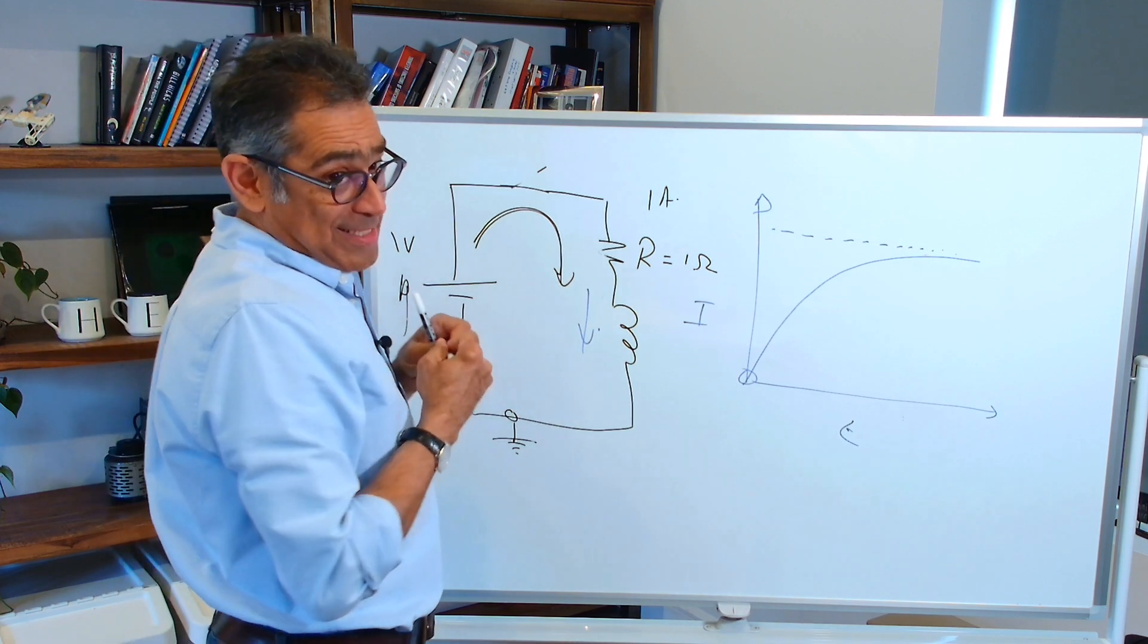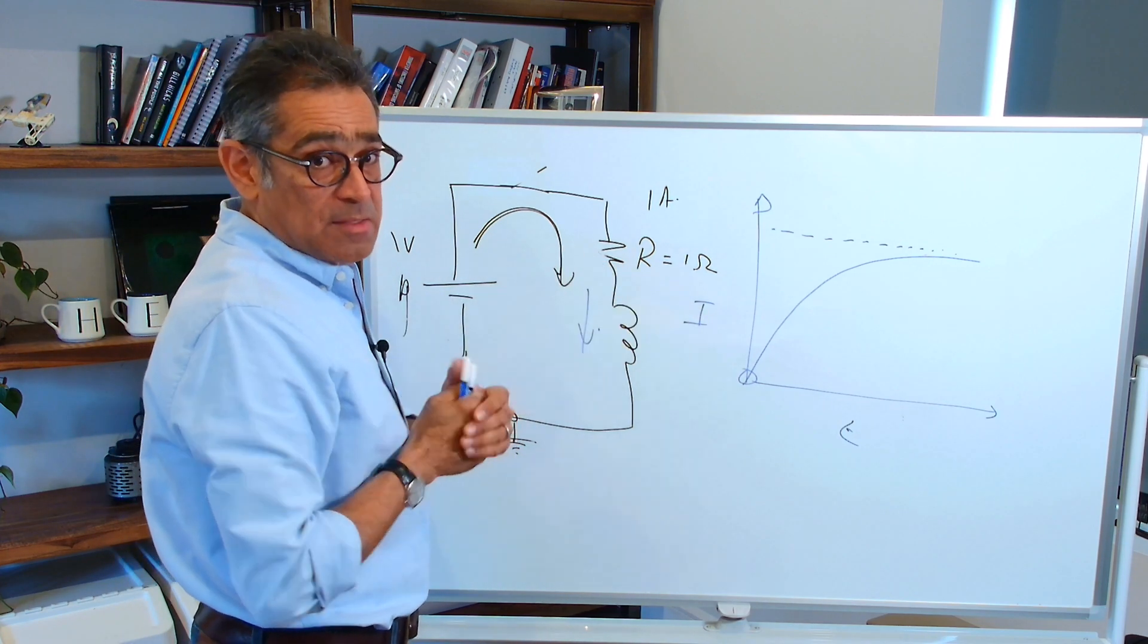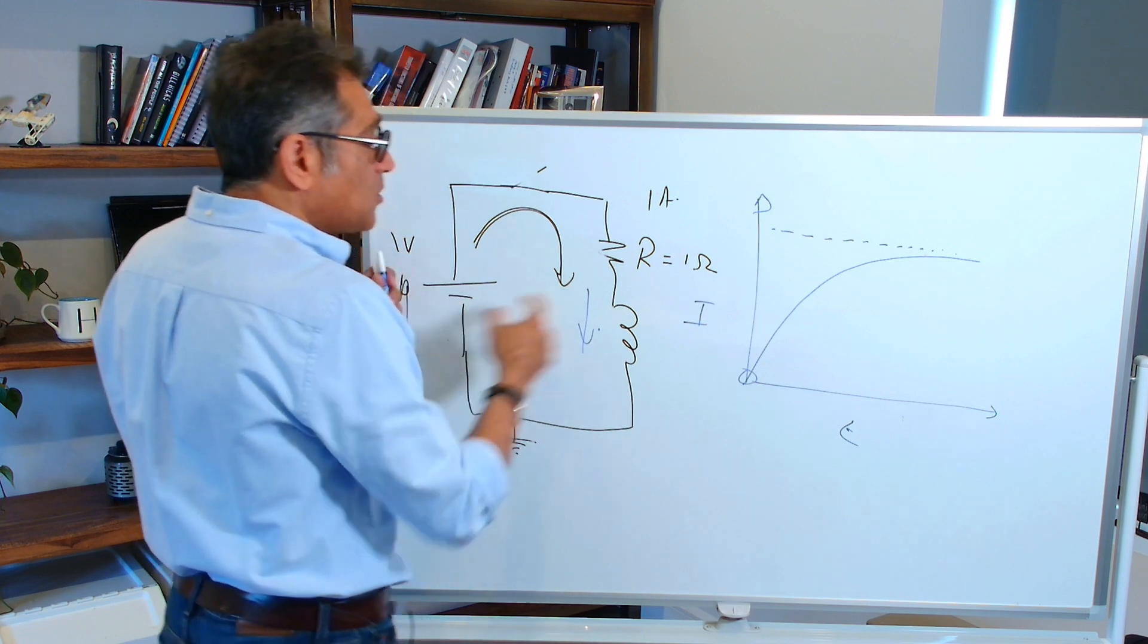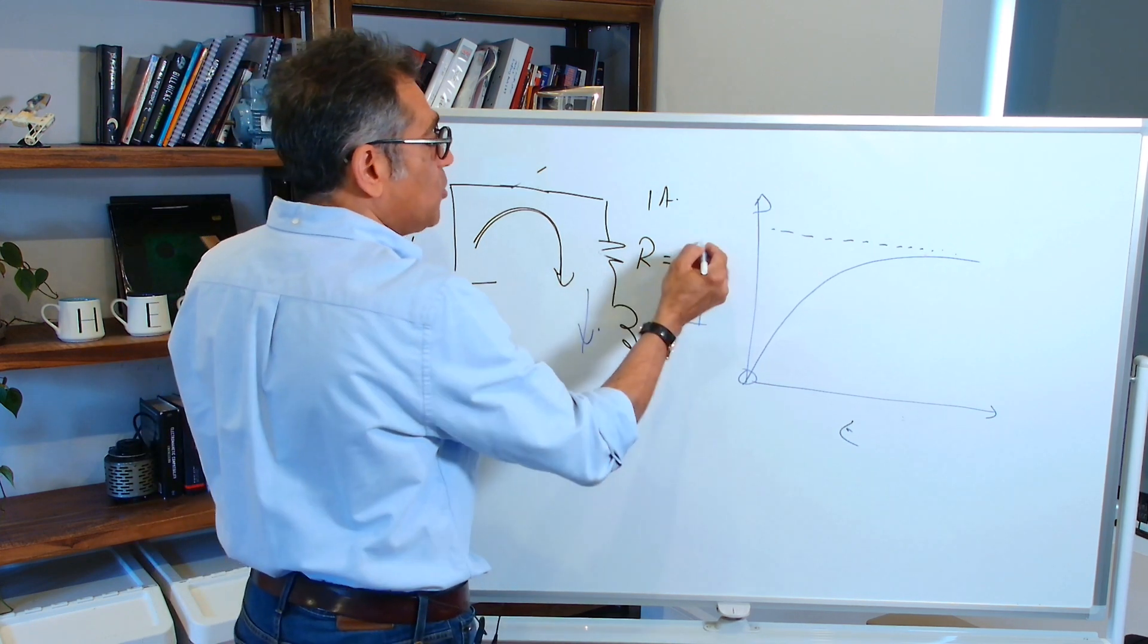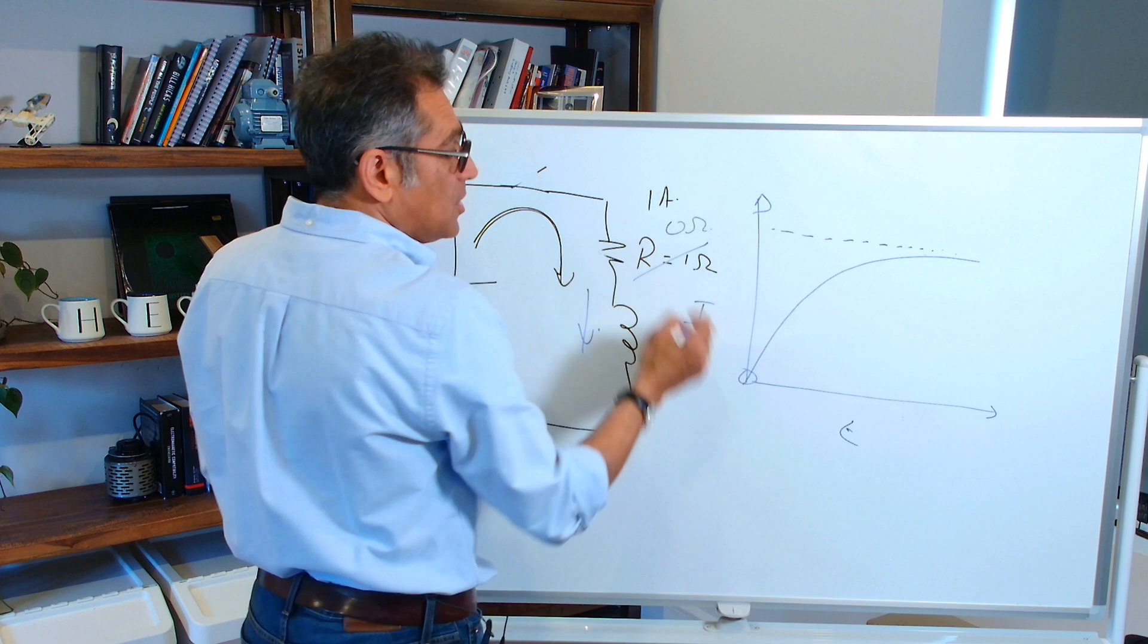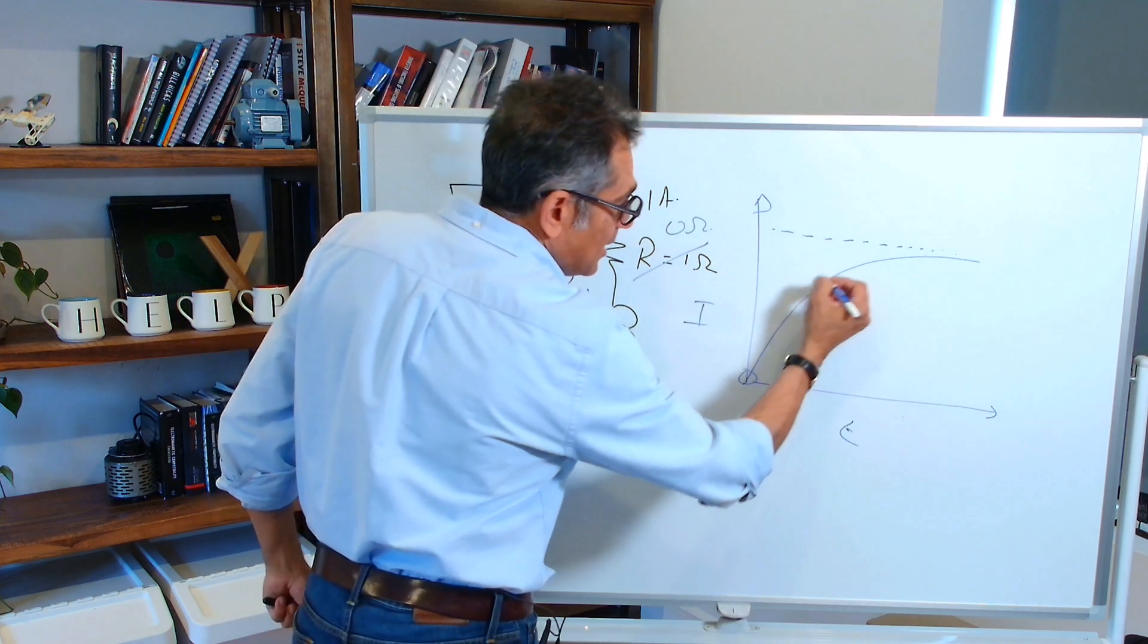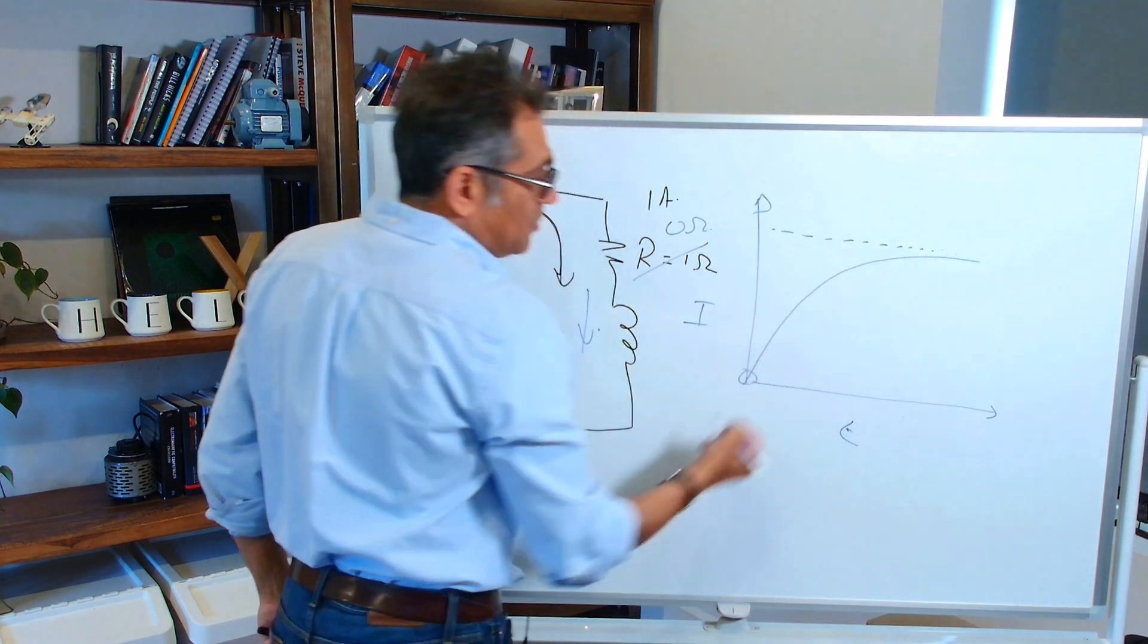Now, unfortunately, in a power supply, it doesn't quite work like that. To start with, this resistance is almost near zero ohms. So you do not see this shape of the curve that you're seeing.